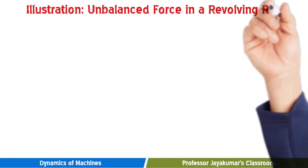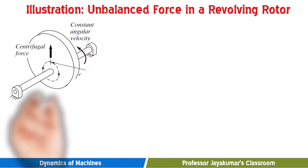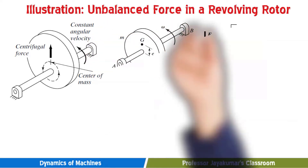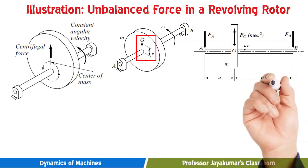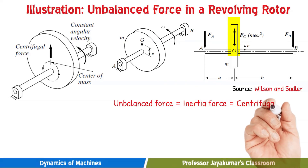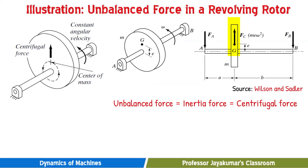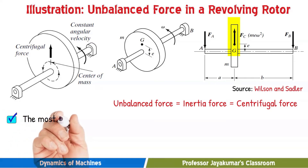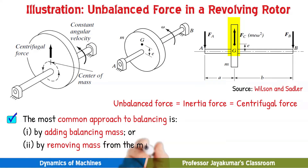Let us consider this illustration of an unbalanced force in a revolving rotor. Consider a rotor mounted on a shaft which rotates with constant angular velocity omega. Here, the centre of mass of the rotor does not lie at the centre of the shaft, so there is an eccentricity E. When the rotor rotates, there will be an inertia force acting radially outwards equal to M·E·ω². That inertia force is nothing but the centrifugal force. This inertia force will exert unbalance on the two bearings A and B, as you can see in the force diagram. This unbalanced, disturbing force caused by the centrifugal force has to be balanced.